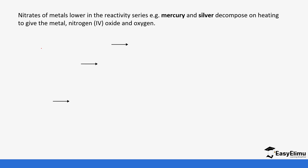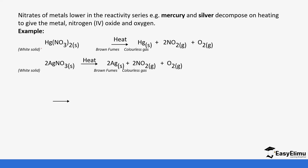The third type covers nitrates of metals lower in the electrochemical series — mercury and silver. These decompose on heating to give the metal, nitrogen dioxide, and oxygen. They decompose fully, which is different from those just below the highly reactive metals. So silver metal is produced, along with nitrogen dioxide (brown fumes) and oxygen.